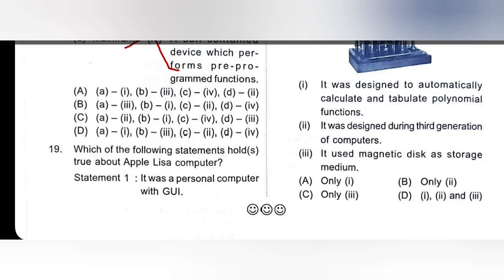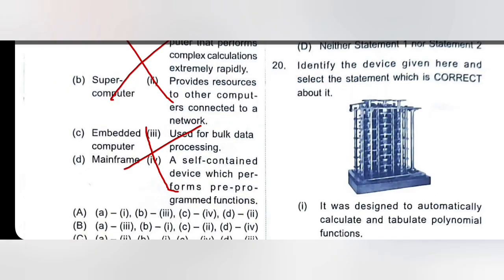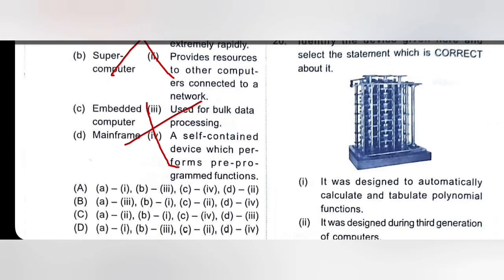Which of the following statements holds true about Apple Lisa computer? Statement 1: it was a personal computer with GUI. Statement 2: it featured drop-down menus and icons. Both statement one and statement two are correct, so C is the right option. Identify the device given here — it was designed to automatically calculate and tabulate polynomial fractions. This is correct, so option one is correct for this. Thank you so much.